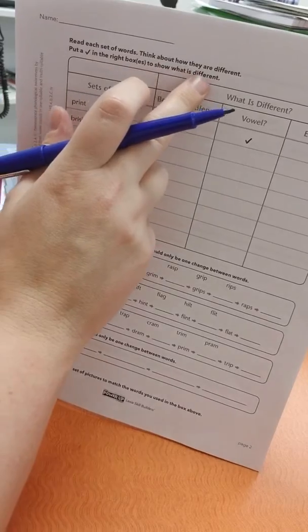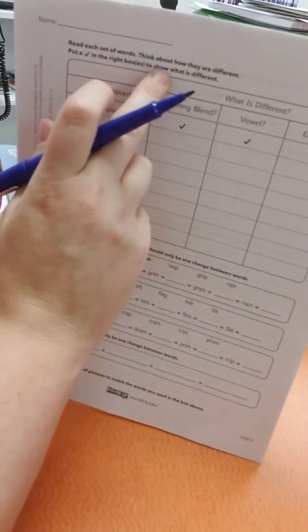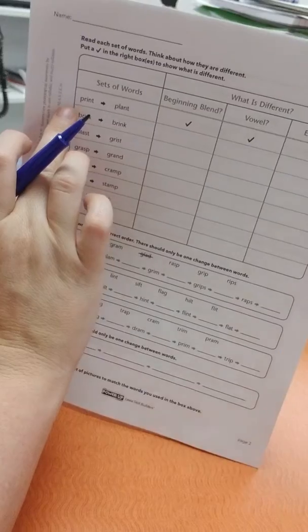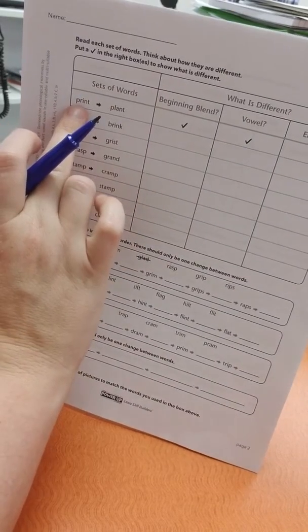Read each set of words. Think about how they are different. Put a check in the right boxes to show what is different. So it's got you here. This is the set of words: print, plant.